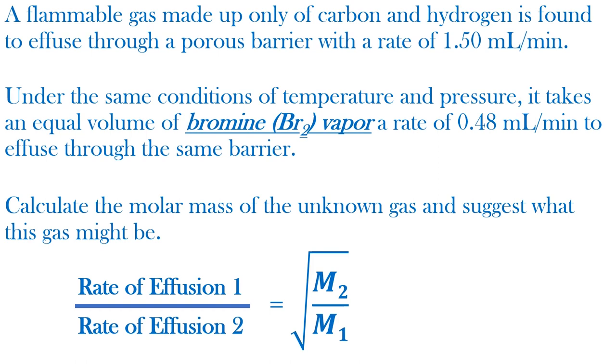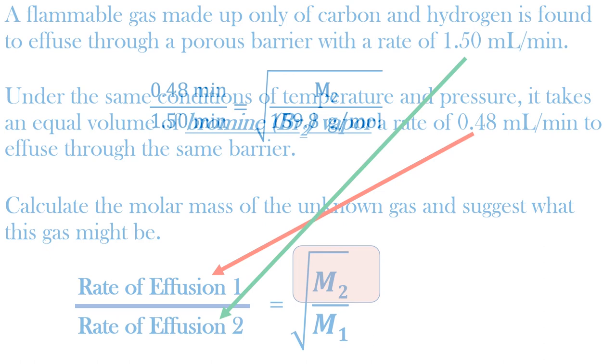Because we're given effusion data of two gases, we can use Graham's law to compare the unknown gas to the known gas. It doesn't matter which gas is gas 1 or gas 2. I typically assign the unknown molar mass as the numerator. Therefore, bromine can be gas 1 and the unknown gas can be gas 2.